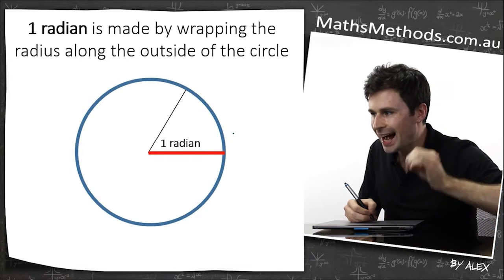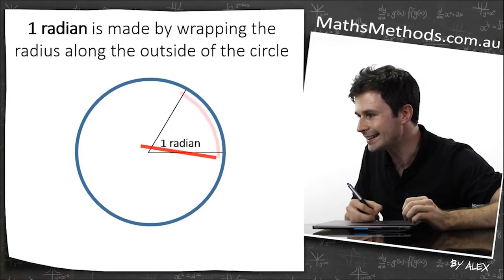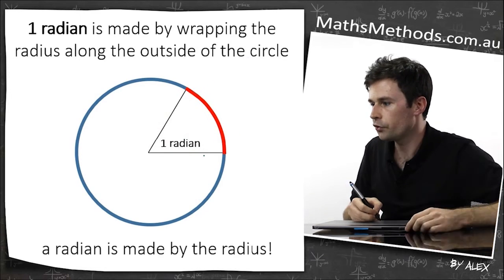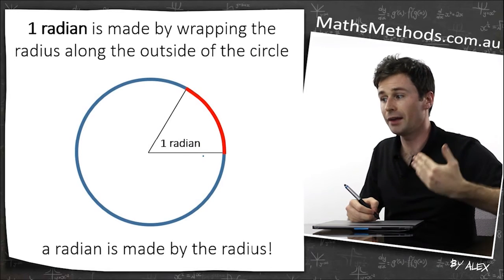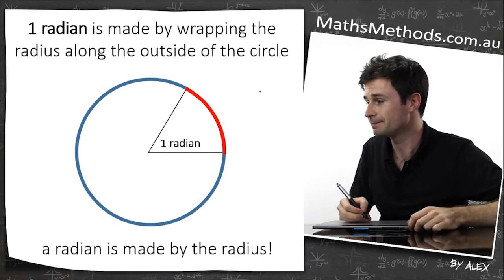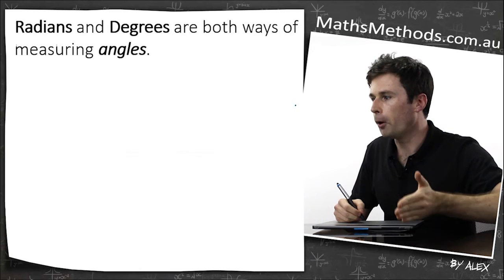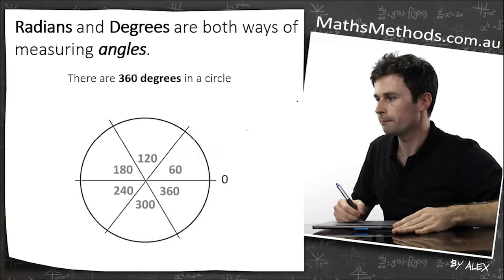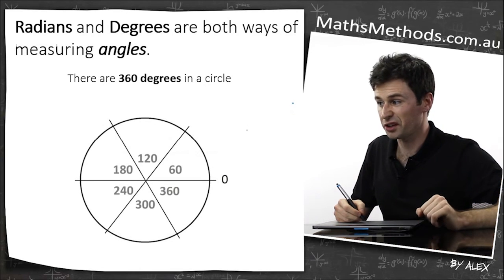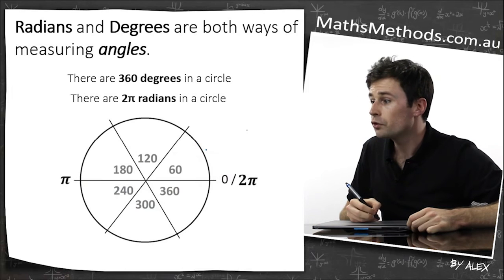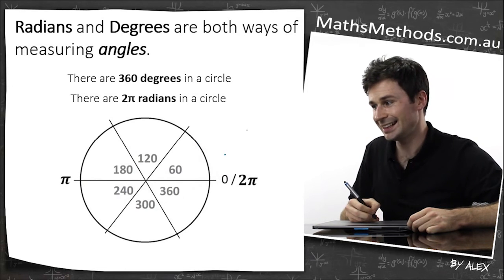So radians and degrees. Well, one radian is actually made by wrapping the radius along the outside of the circle. So a radian is actually made by the radius, hence the name. Radians and degrees are both ways of measuring angles. You probably heard there's 360 degrees in a circle. There's also two pi radians in a circle.